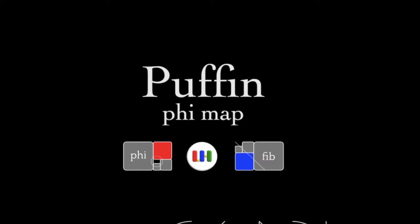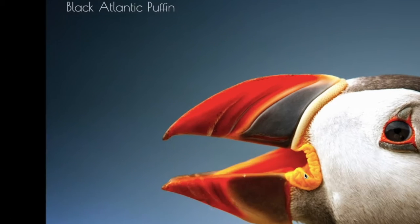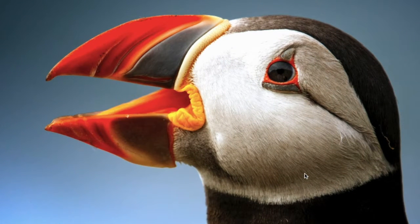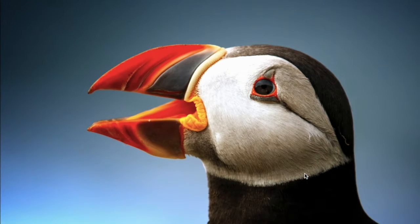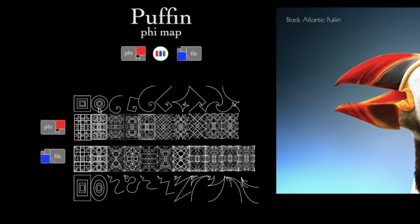Hello, welcome to another episode of Phi Mapping. Today we're going to look at this Black Atlantic Puffin, specifically the head of this Black Atlantic Puffin. We're going to use some of these maps, which are created using these basic shapes found in the two different patterns of phi.